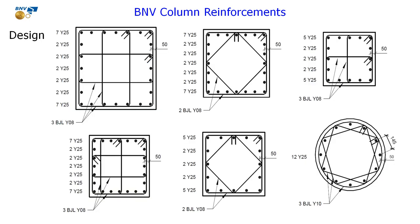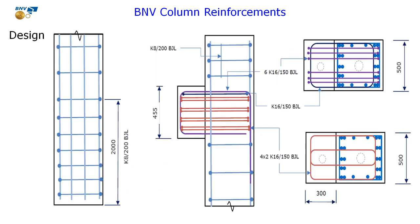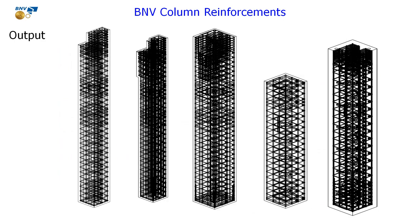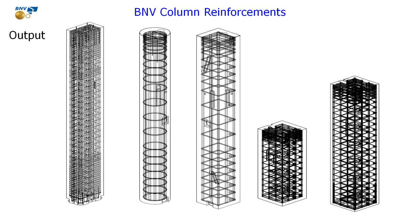You can customize main rebars to any type of design. The column shape can be square, rectangle, or circle. You can model full rebars for many types of columns — circle, rectangle, square.